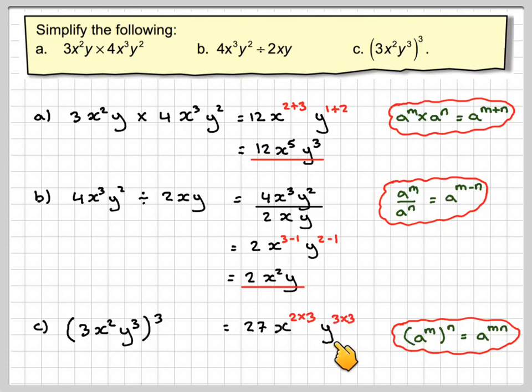So we're going to have 27, x to the power of 6, y to the power of 9 as the final answer.